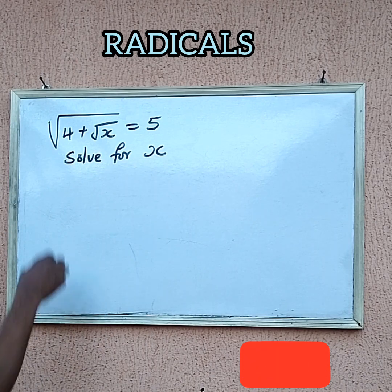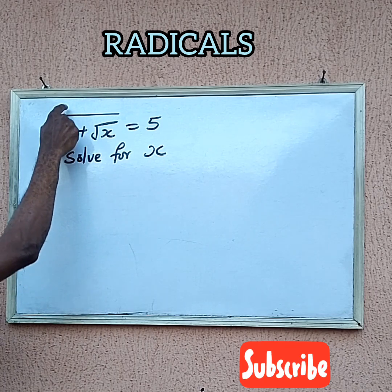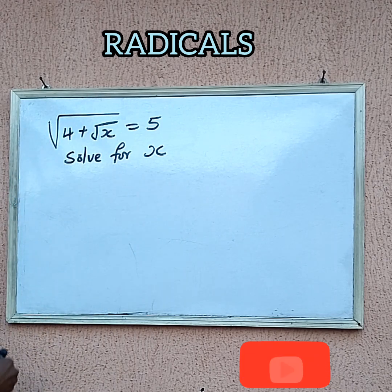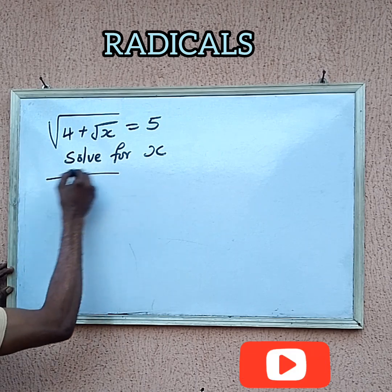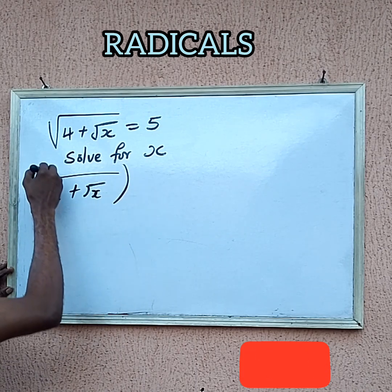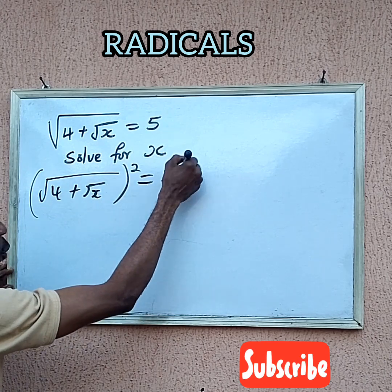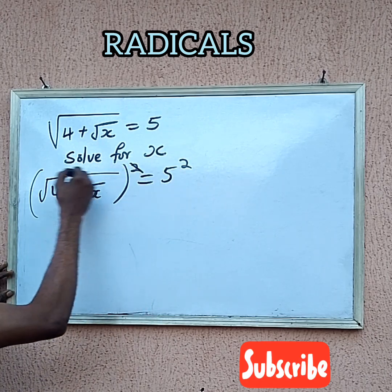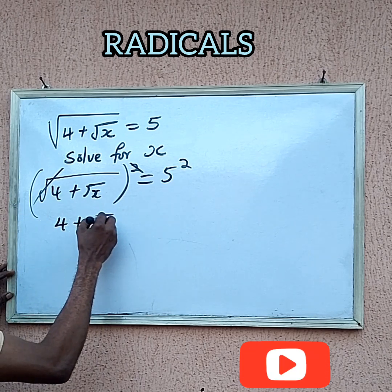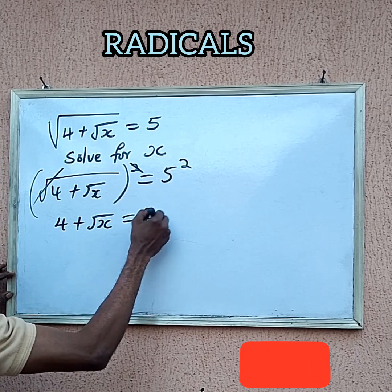Now what do we need to do? Since we are having two radicals here, before we get rid of this first one, we do so by squaring both sides. If I square both sides — squaring the root of 4 plus the square root of x — this big root will cancel out. We will now have 4 plus the square root of x equal to 5 squared, which gives us 25.